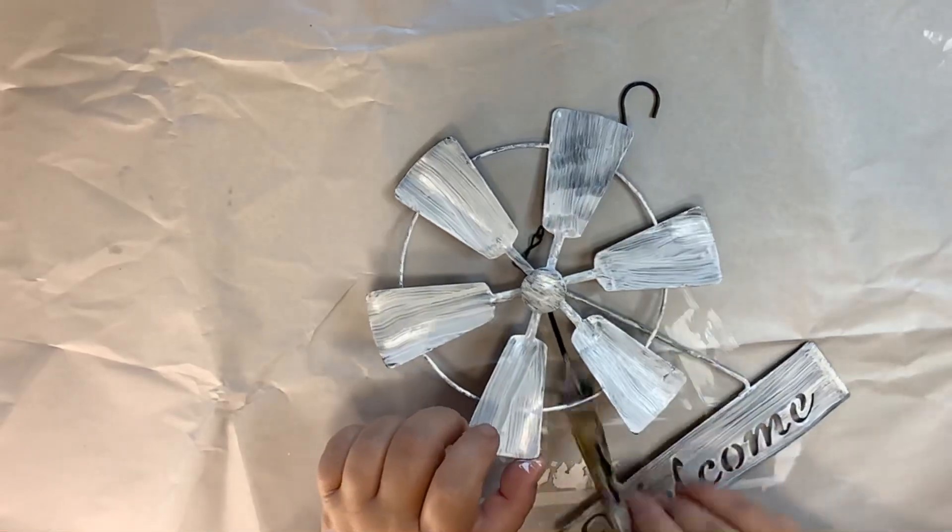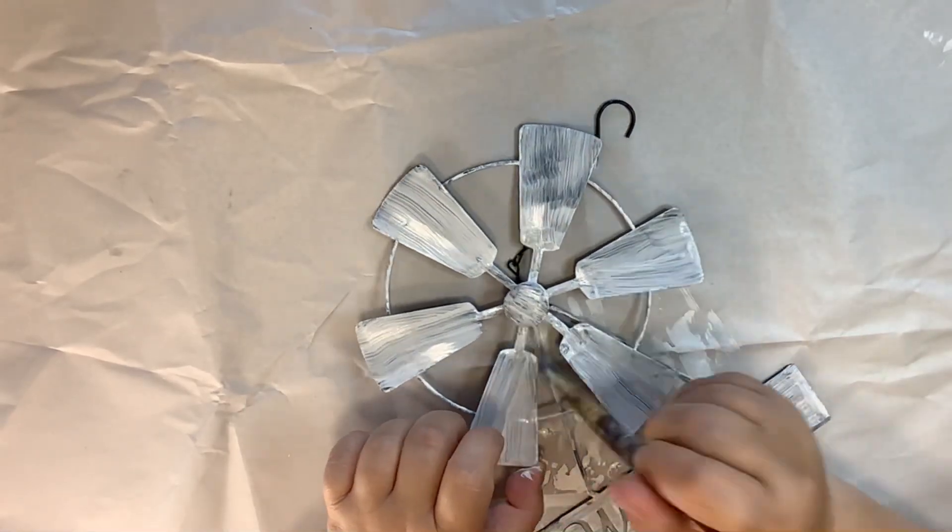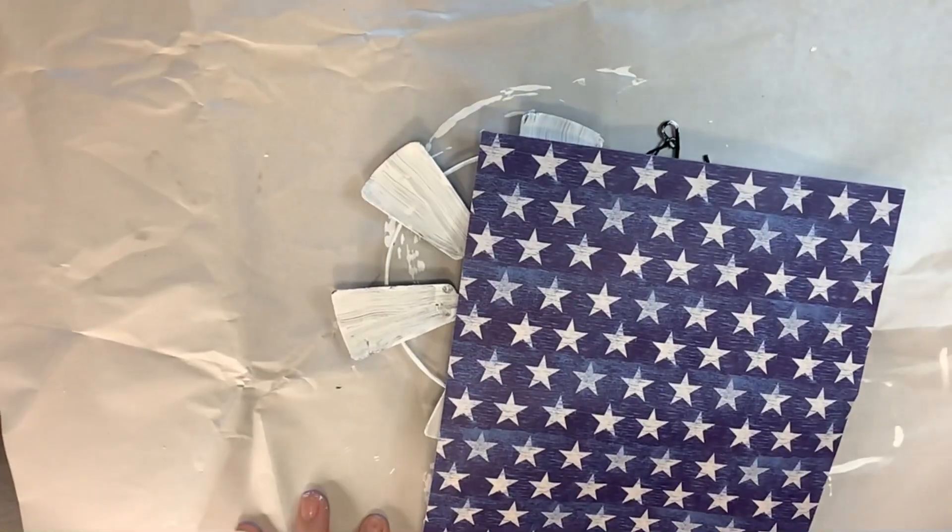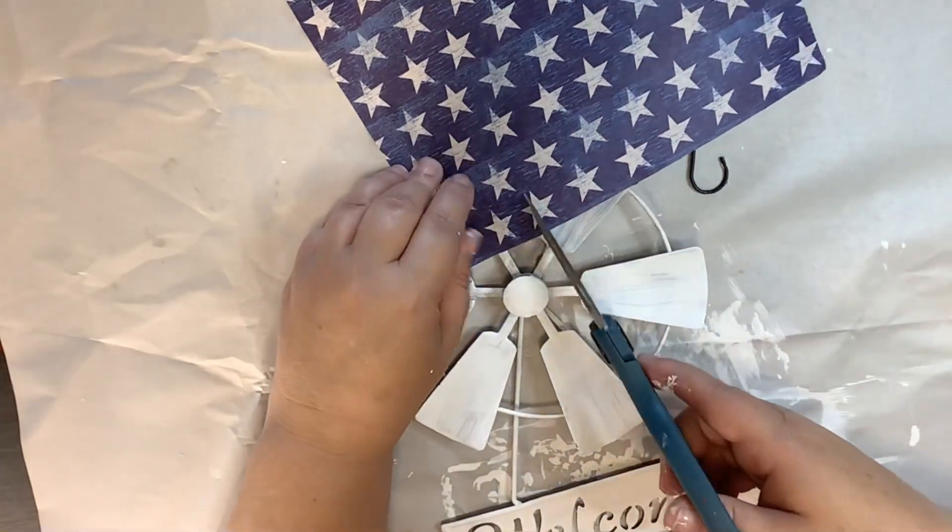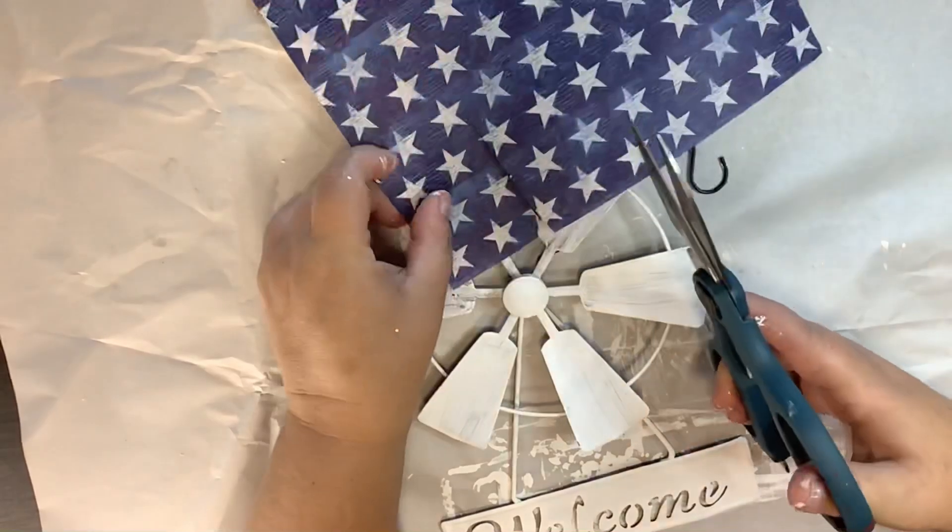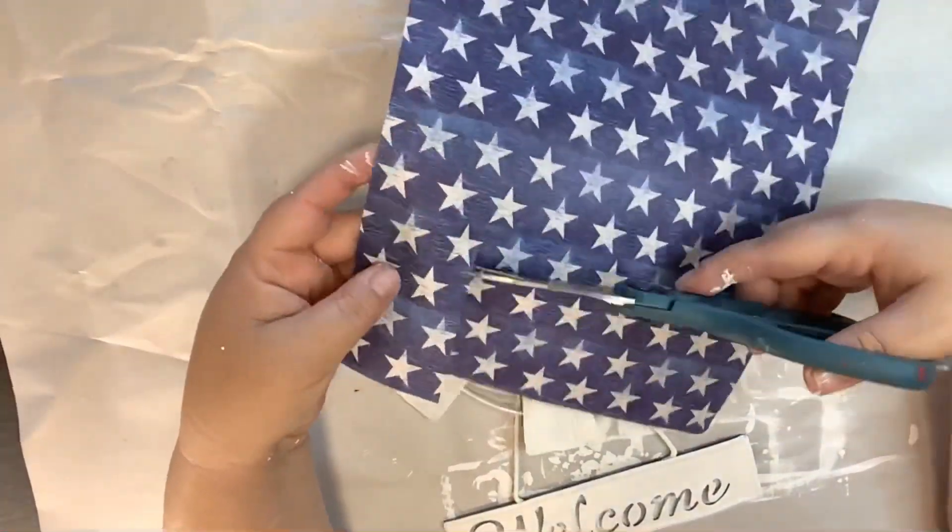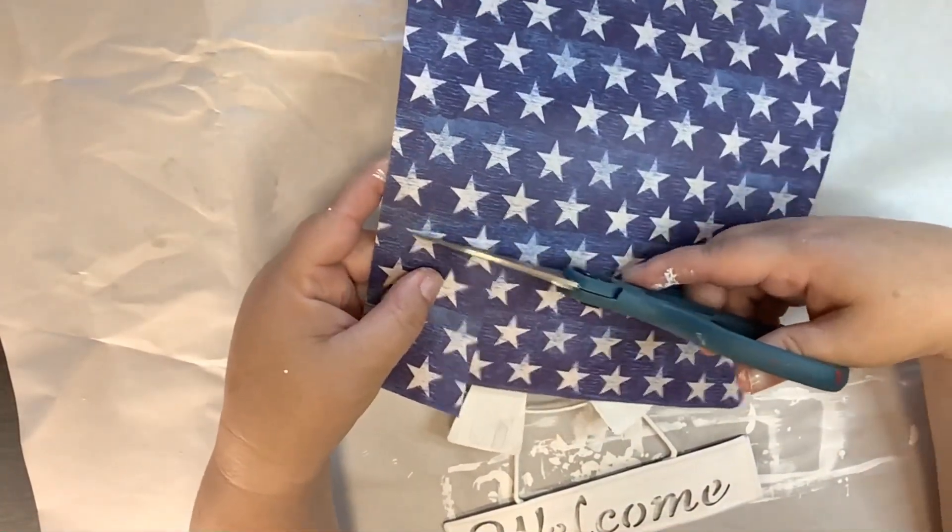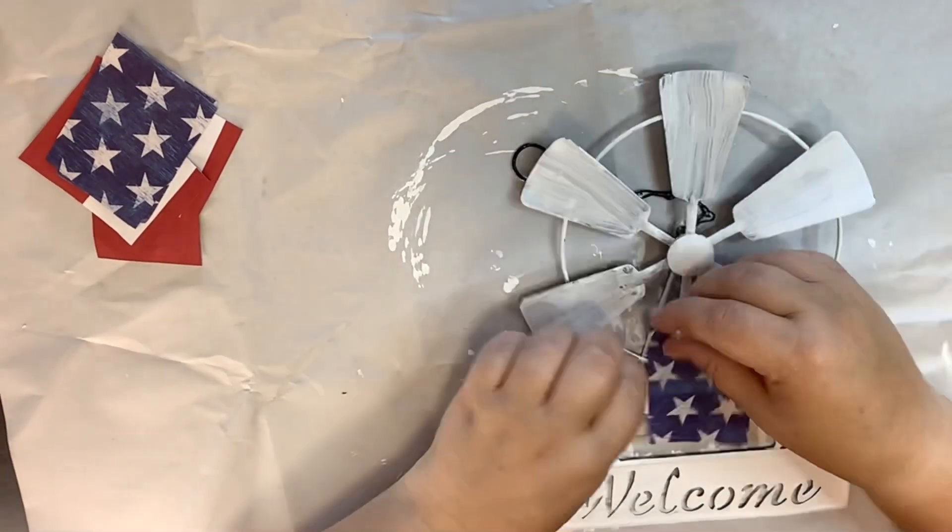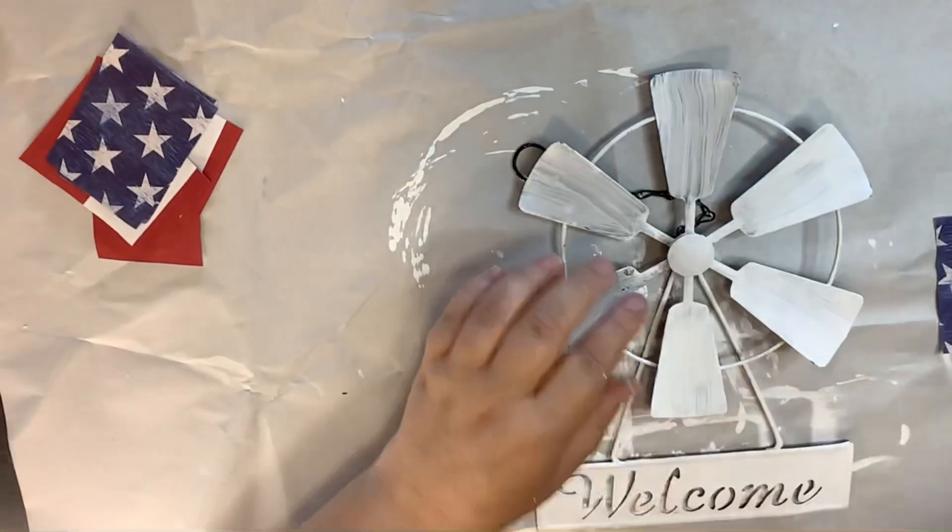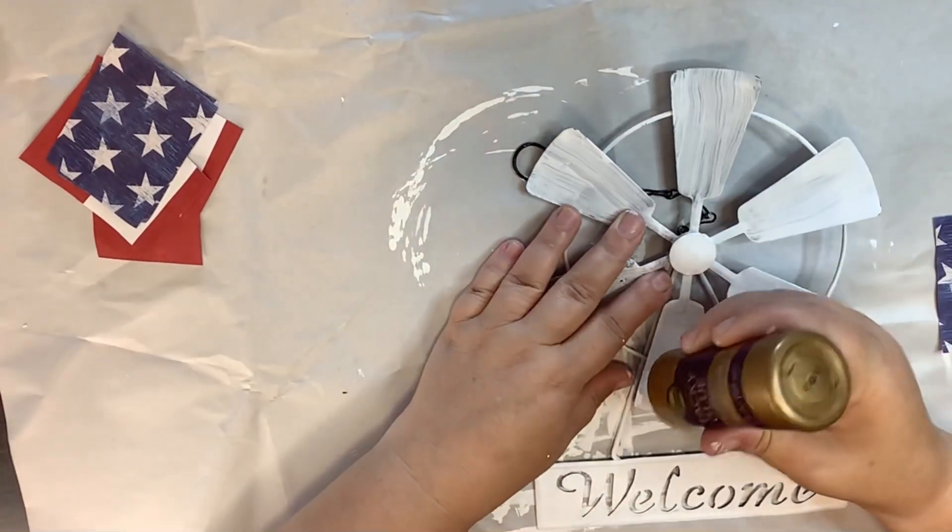After two good coats we're going to take this scrapbook paper that I got from Hobby Lobby. I got the blue with the white stars and I'm just going to kind of measure out how big the blade is to the windmill and I'm going to cut three pieces of this blue and then the red and white scrapbook paper, and I do the same thing to that.